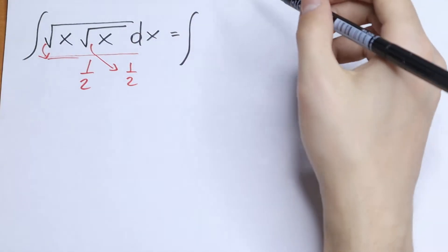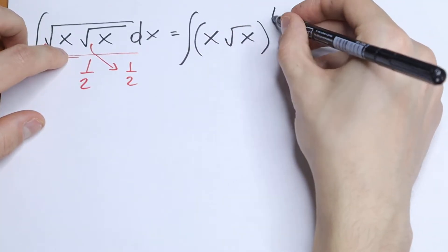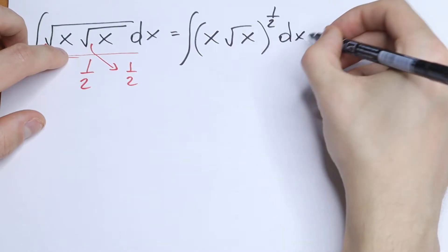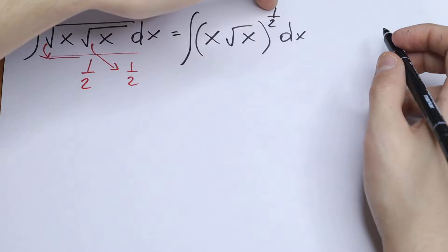So as a result we will have this square root, we can write as x square root of x all raised to the power 1 half dx. So we write this square root sign, but we write it here as 1 half.